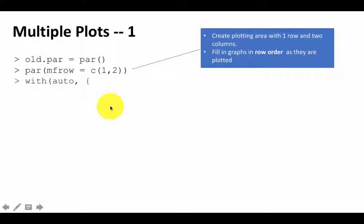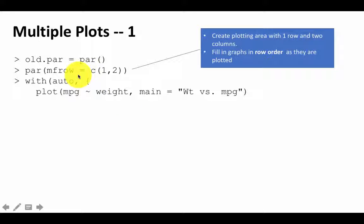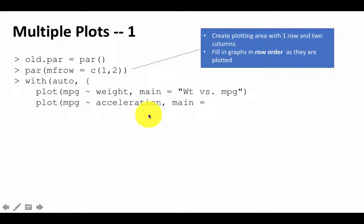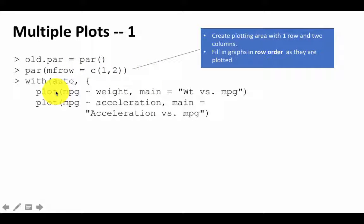Then, with auto as the data set, I plot MPG with weight and give the chart a name, and then plot MPG with acceleration and give that chart a name. Because we can plot two charts — this will be the first chart appearing on the left, and this will be the second chart appearing on the right.